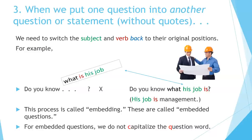When we put one question into another question or statement without quotes, we need to switch the subject and verb back to their original positions. For example, the question 'What is his job?' put into 'Do you know?' becomes 'Do you know what his job is?' — not 'Do you know what is his job?' Notice we're using the same sentence structure as in a statement: 'His job is management.' This process is called embedding, and these are called embedded questions.